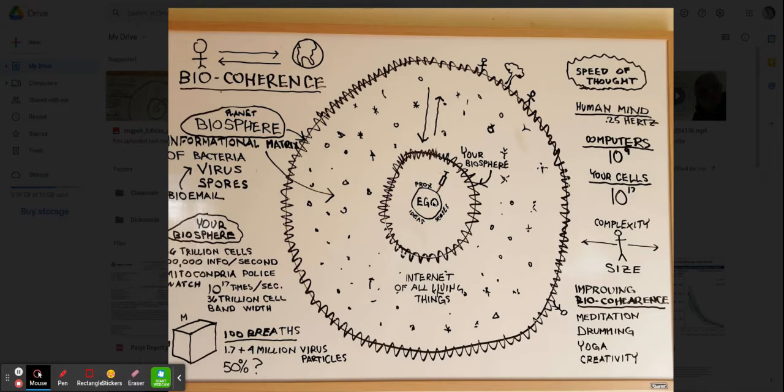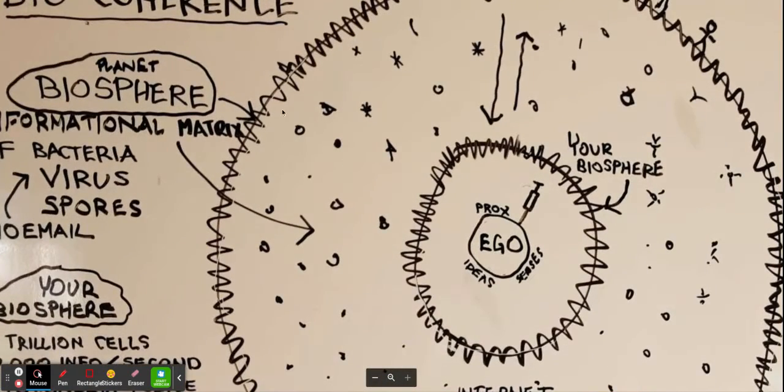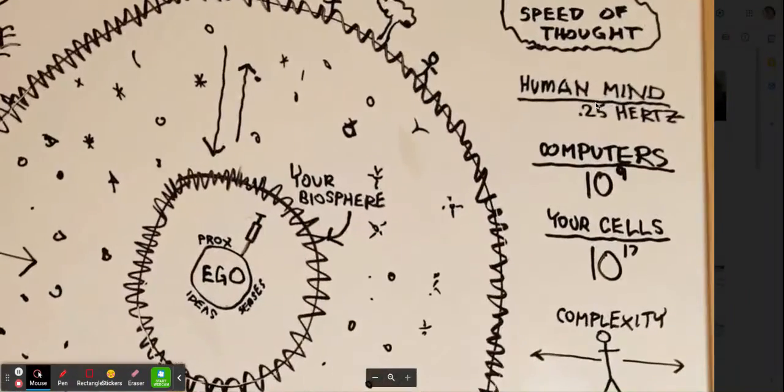Because the other level of communication between the Earth's biome and your biome is going on much faster than you can imagine. The human mind can only come up with a thought like every four seconds because you have to choose words and string them together and make a sentence.